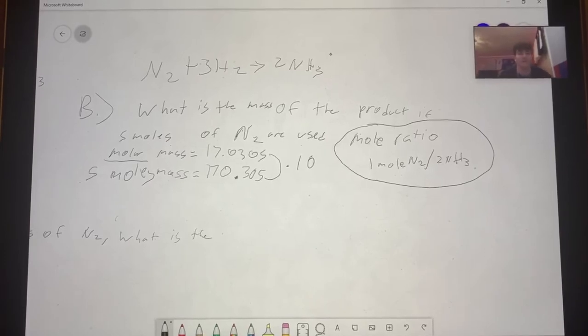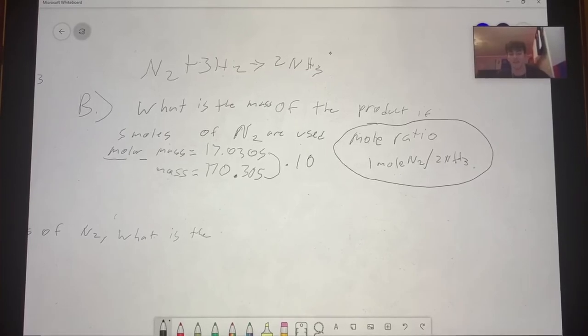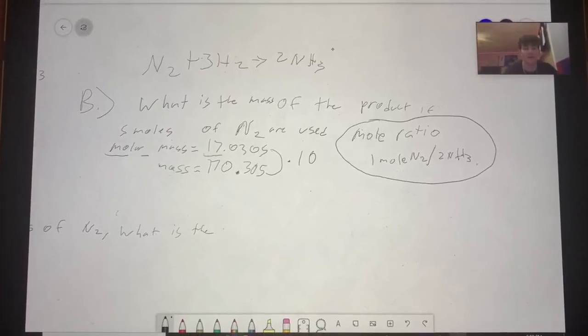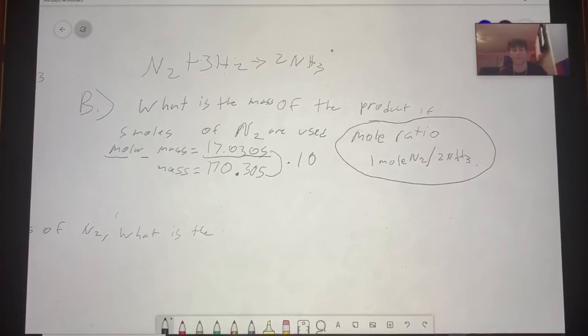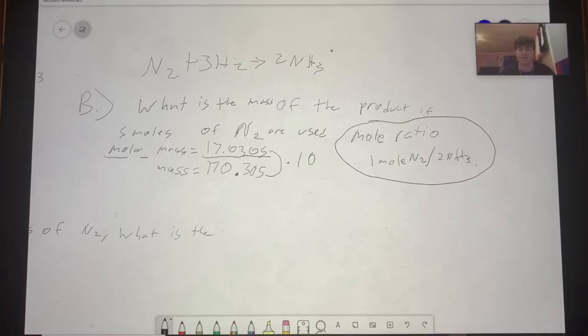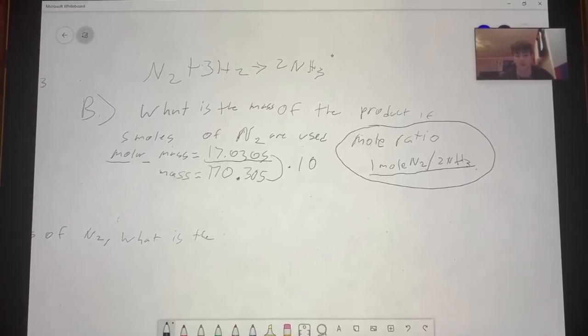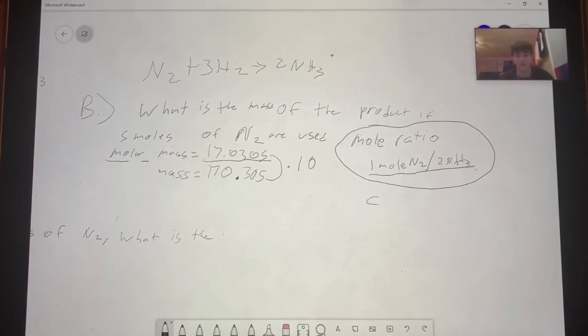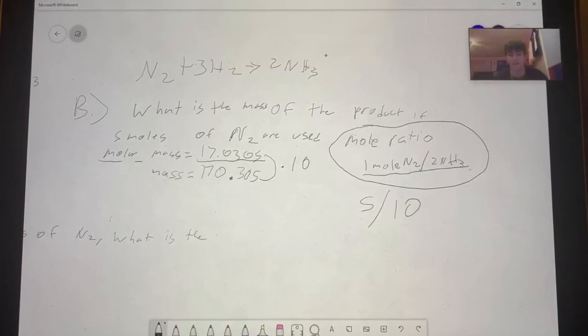We also need our molar mass since we are trying to find the mass of five moles of N2. Mass of NH3 as we found in part A is 17.0305. We have to multiply this by 10 because of its ratio 1 to 2. For every one mole of N2, it is two moles of NH3. Since there's five moles of N2, we have to have 10 moles of NH3.